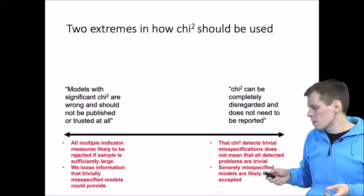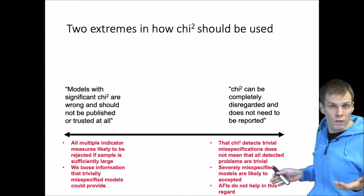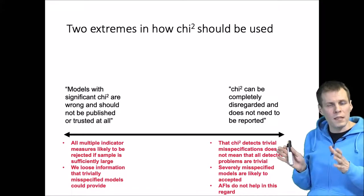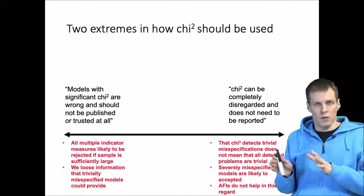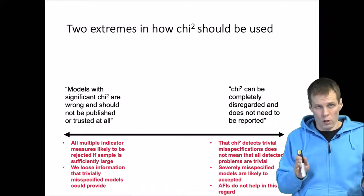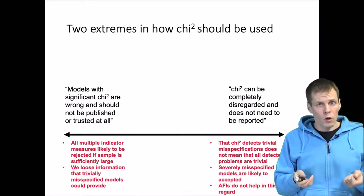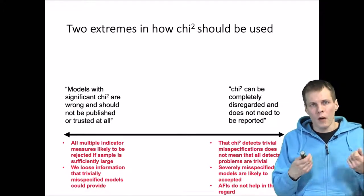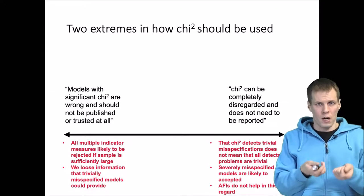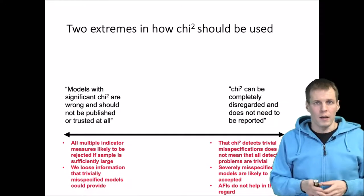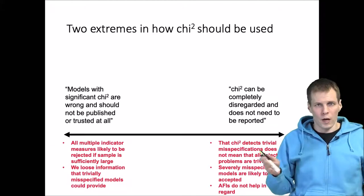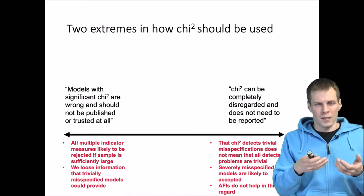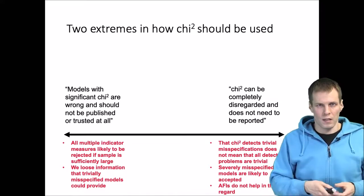Finally, it is not clear whether alternative fit indices actually help in detecting model misspecifications — there is mixed evidence of whether they work. We know for sure they will not always work, and the problem is how would you know if your study is a scenario where the CFI 0.95 rule is guaranteed to produce only trivially misspecified results.